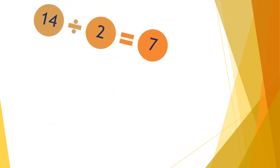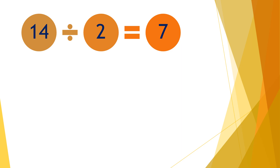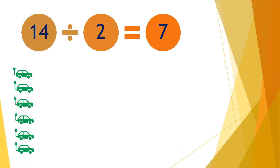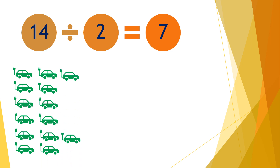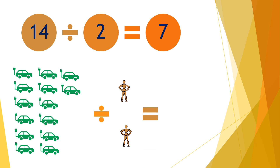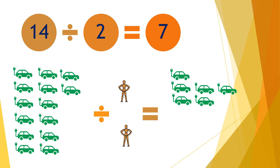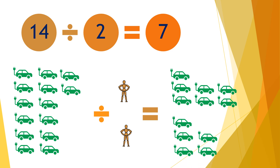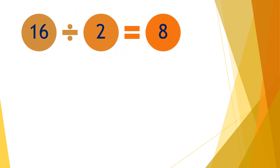Moving on to the next question: fourteen divided by two equals seven. So if you have fourteen cars and divide them by two people, each person will receive seven cars — one through seven for each person.